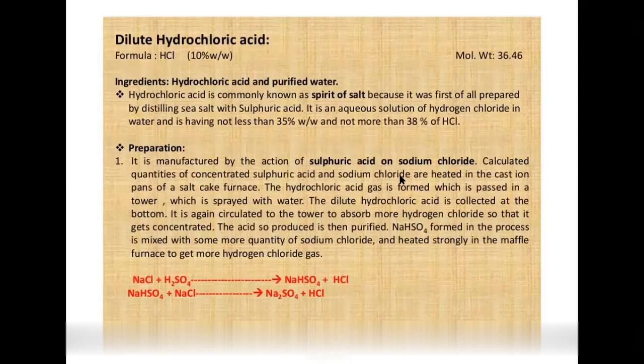The assay of ammonium chloride was previously done by precipitation and titration using the Volhard method; now it is done by acid-base titration. Dilute hydrochloric acid, also called spirit of salt, was first prepared by distilling sea salt. It is an aqueous solution of hydrochloric acid in water containing not less than 35% and not more than 38% w/v of HCl.